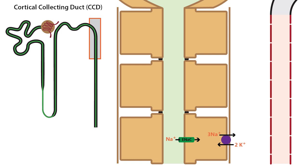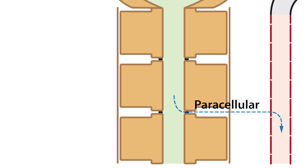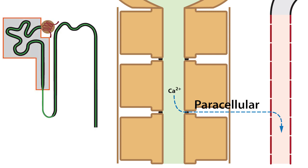Now, relative to transcellular reabsorption, paracellular reabsorption plays a smaller role, but an important one. For example, paracellular reabsorption accounts for a large part of calcium reabsorption along the proximal tubule and thick ascending limb. Likewise, paracellular reabsorption dominates chloride reabsorption along the proximal tubule.